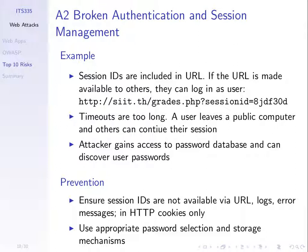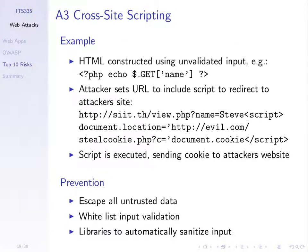We've gone through broken authentication earlier. Cross-site scripting we haven't seen — we'll briefly mention it; I don't have a demo. A simple example: some PHP code echoes the value of the name variable from a URL. You can create a URL like this one where after the question mark you pass in parameters — name equals Steve, for example. That parameter is returned from the special GET variable in PHP, so GET name returns the value of the name parameter in the URL, and that's used in some applications.